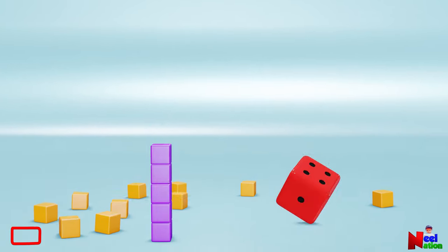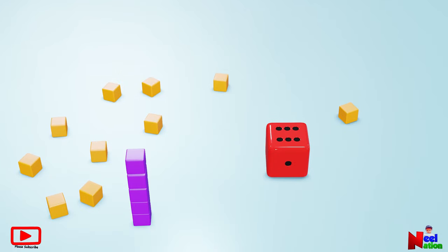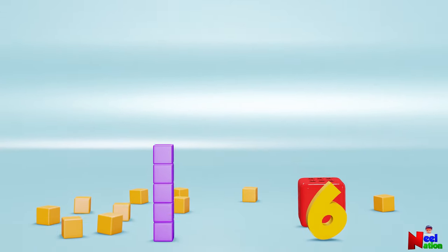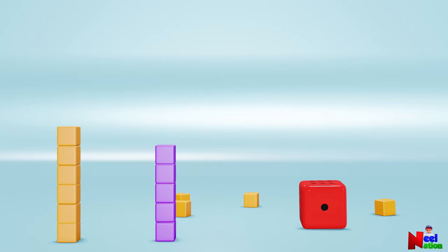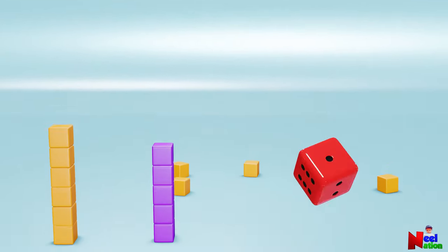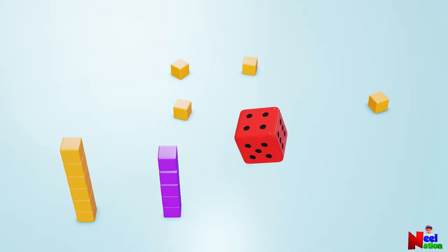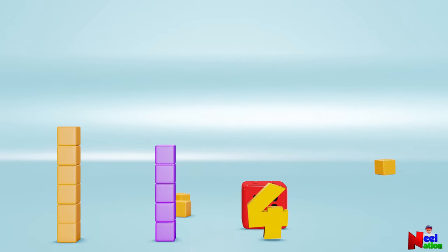Now, let's build the yellow tower. Dice shows the number six. Let's stack six cubes on top of the other. Let's roll the dice. Dice shows the number four. Let's stack four more cubes on top of the tower.